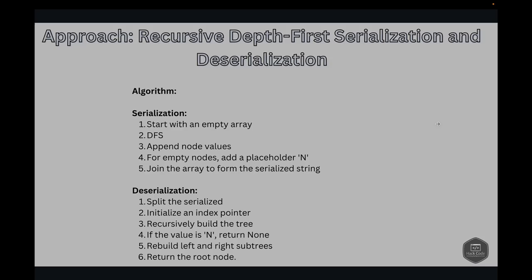The task is twofold. First, serialization: we need to write a function that takes a binary tree and converts it to a string format while preserving the tree's structure. Next, deserialization: we must design a function to take that string and reconstruct the exact same binary tree. This problem is not only about understanding trees but also about efficiently encoding and decoding tree structures.